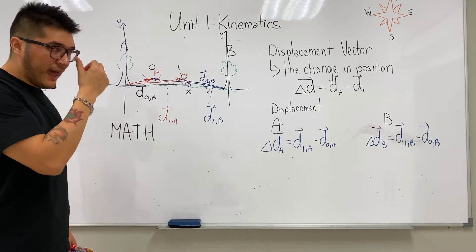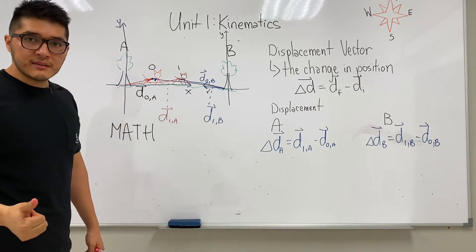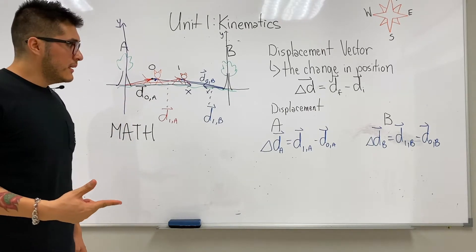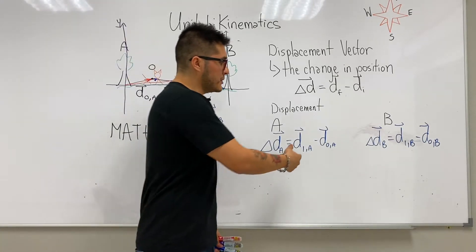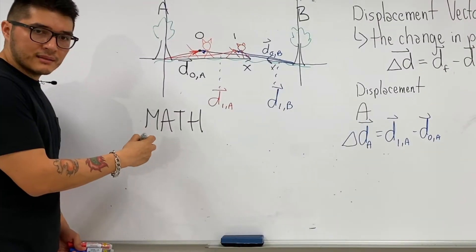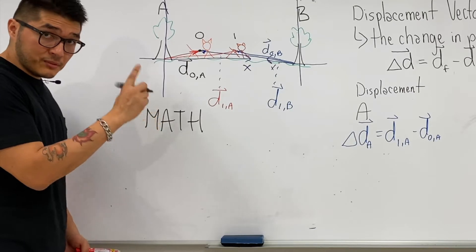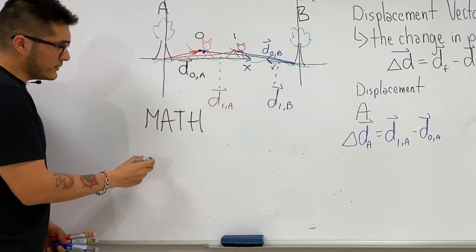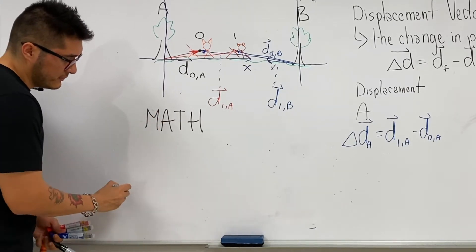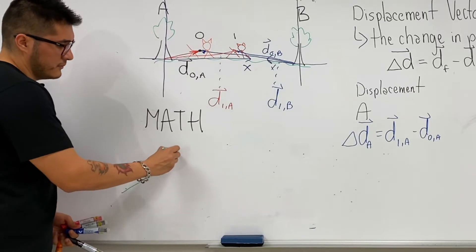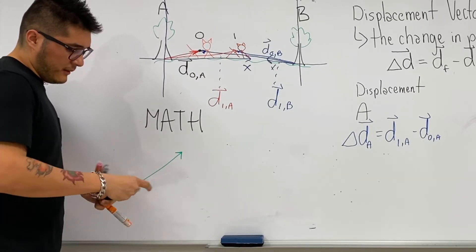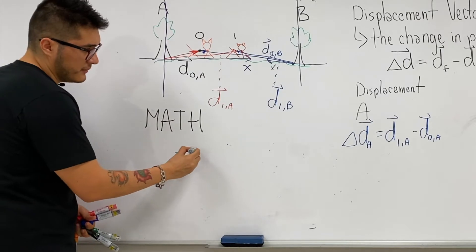I'm going to show you how to add vectors together and how to multiply vectors, because we need to know that before we can subtract vectors. This is going to be the simplest way of doing it. Suppose you have a random vector, and then a second random vector.